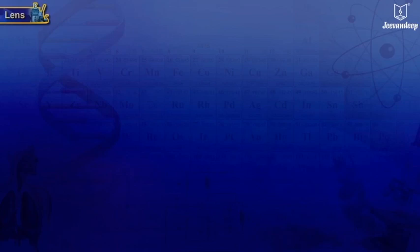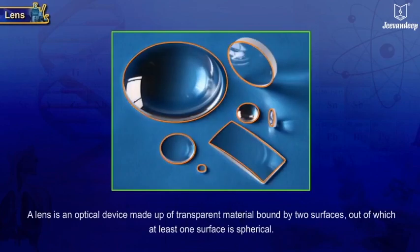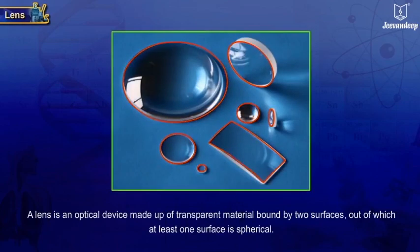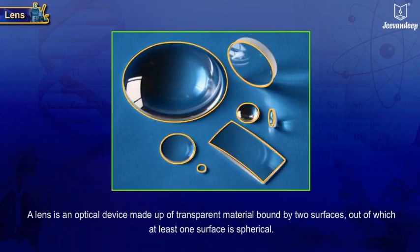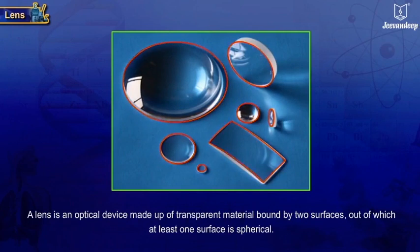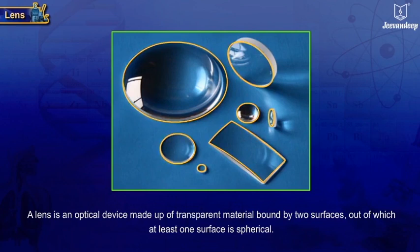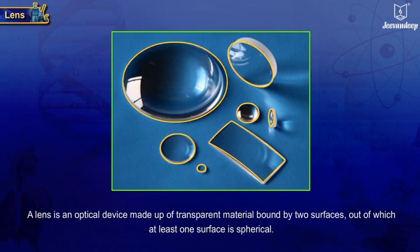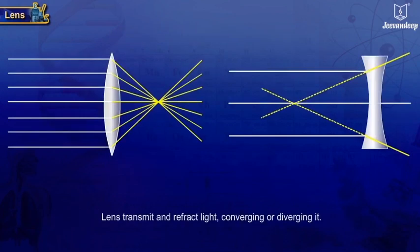A lens is an optical device made up of transparent material bound by two surfaces, out of which at least one surface is spherical. It transmits and refracts light, converging or diverging it.